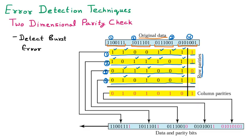Since this is two-dimensional, one dimension (row parity) has been calculated. Now it's time to calculate the other dimension: the column parity. Taking the first column, we find ones: one, one — already even, so zero is added. In the next column we have one, two, three — odd, so we add one more one. In the following column: one and two — already even, so zero is added.